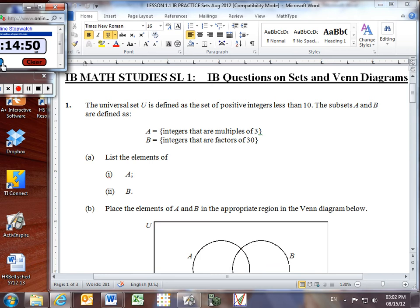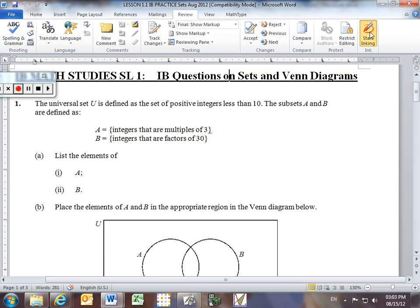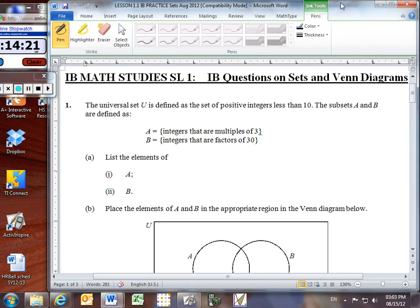The universal set U is defined as the set of positive integers less than 10. I'm just going to write out what my positive integers less than 10 are. So U is going to be equal to the set of all positive integers. The smallest positive integer is 1, and they have to be less than 10, so we can only go up to 9.